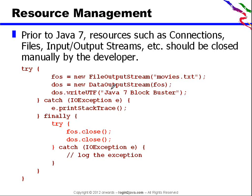Resource manager - this is another very beautiful feature that came into Java 7. Prior to Java 7, resources such as connections, files, input-output streams, and even socket connections should be closed manually by the developer.